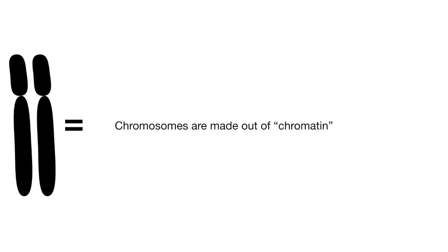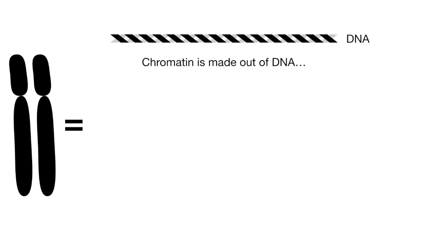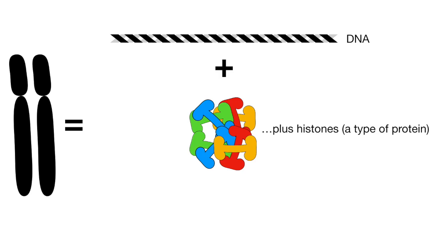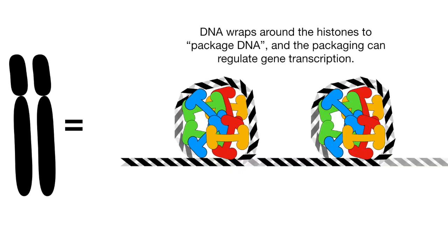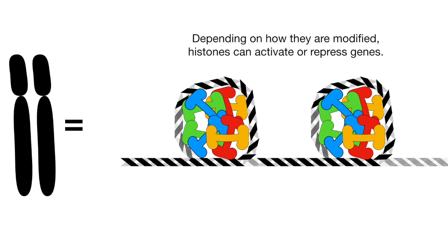Chromosomes are made out of chromatin. Chromatin is made out of DNA plus histones, a type of protein, plus other proteins that we'll talk about some other day. DNA wraps around the histones to package DNA, and the packaging can regulate gene transcription. Depending on how they are modified, histones can activate or repress genes.